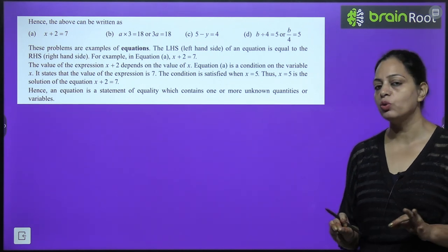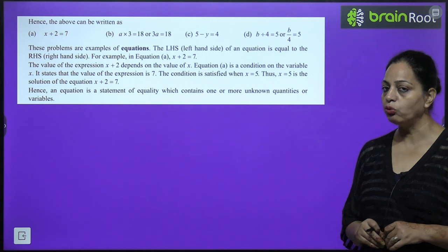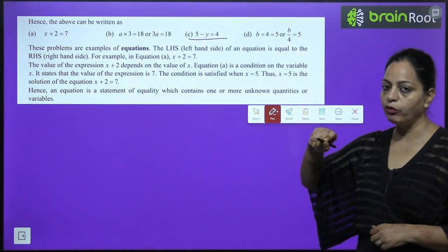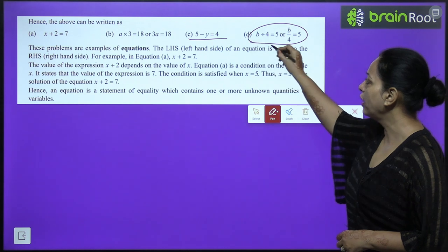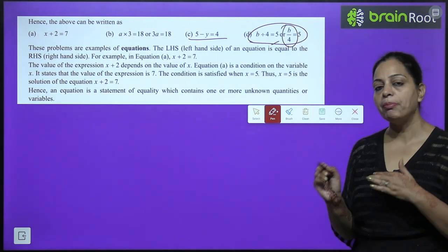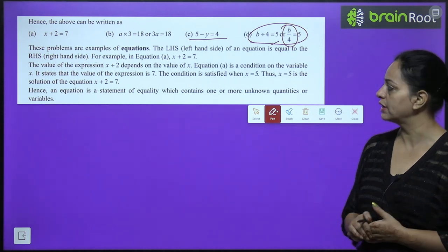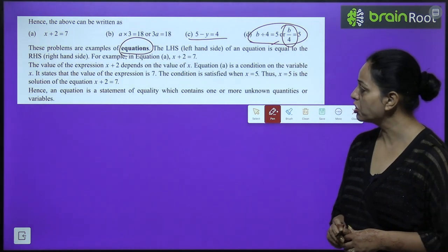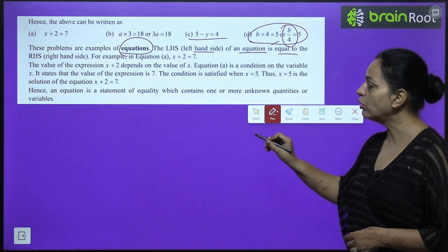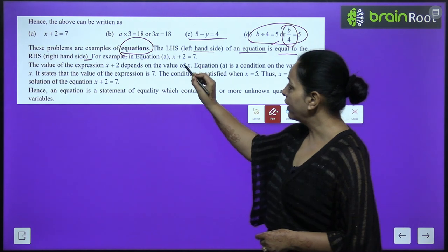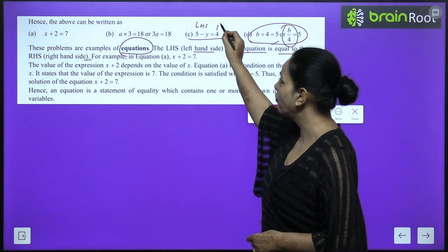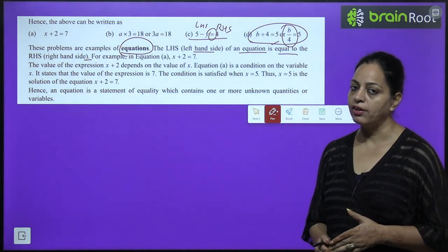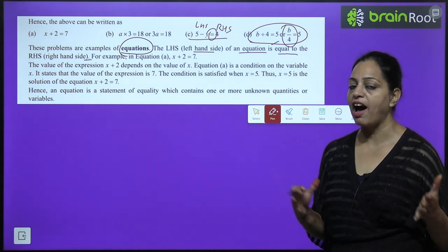B part: A into 3 equals 18, or 3A equals 18. C part: 5 minus y equals 4. D part: B divided by 4 equals 5. We use variables instead of blank boxes. These problems are examples of equations. The left-hand side of an equation is equal to the right-hand side.